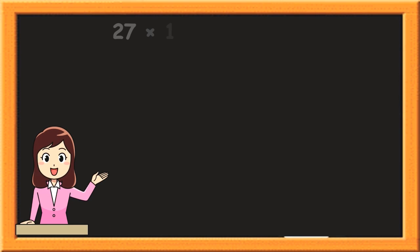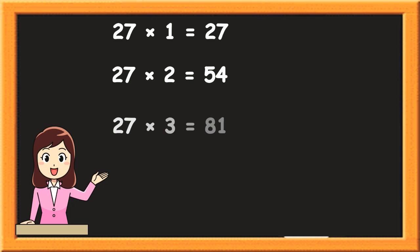27 1s are 27. 27 2s are 54. 27 3s are 81. 27 4s are 108. 27 5s are 135.